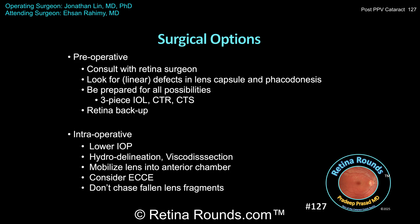Here are your take-home points. Preoperatively, when evaluating a patient with a post-vitrectomy cataract, it's helpful to consult with the retina surgeon to determine how rapidly the cataract developed and whether there were any concerns for posterior capsular violation during vitrectomy. High-risk cases are those in which more aggressive anterior shaving was performed, which may have damaged the lens capsule and zonules. For retina surgeons, it's important not to allow instruments to cross the midline and contact the posterior capsule. During preoperative assessment, look carefully for any lens capsular defects — especially linear defects from the vitrectomy probe or light pipe. UBM can help identify posterior capsular defects in dense cataracts. Also look for phacodonesis, which may indicate zonular laxity or damage.